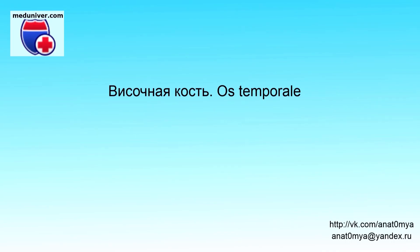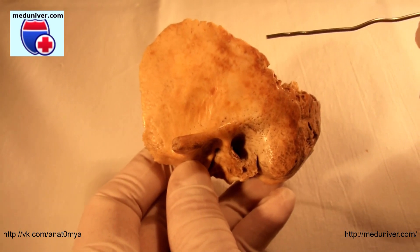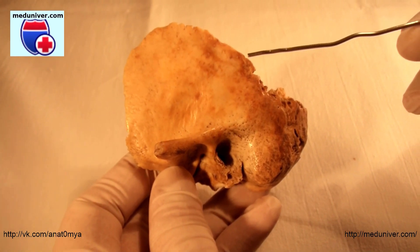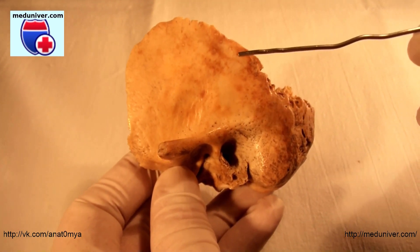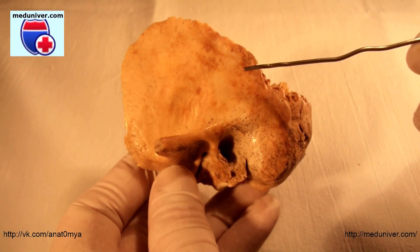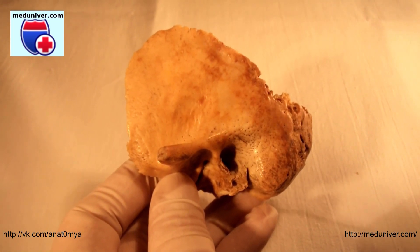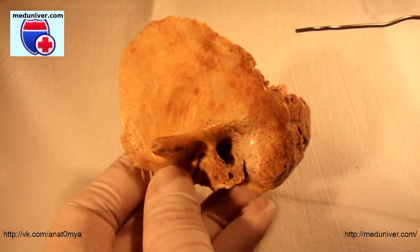Hello everyone! Today we'll talk about the temporal bone. The temporal bones are a pair of bilateral symmetrical bones that constitute a large portion of the lateral wall and base of the skull, and contain organs of hearing and balance.